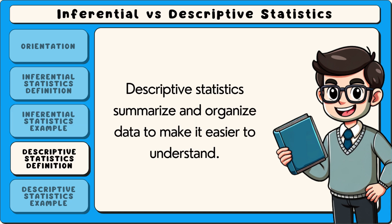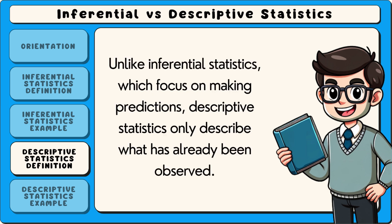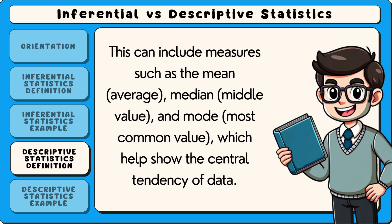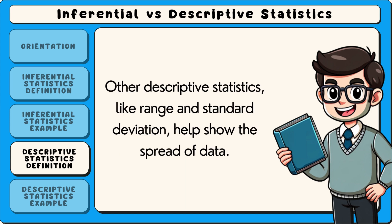Descriptive statistics summarise and organise data to make it easier to understand. Unlike inferential statistics, which focus on making predictions, descriptive statistics only describe what has already been observed. This can include measures such as the mean, median and mode, which help show the central tendency of data. Other descriptive statistics like range and standard deviation help show the spread of data.